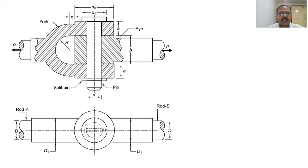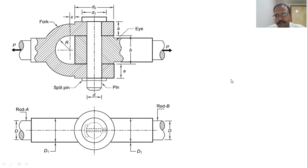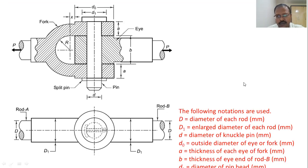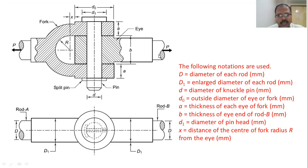This is a two-dimensional sketch of a knuckle joint. We can see there are three elements in the assembly of a knuckle joint: one is eye, second one is fork, and the third one is the knuckle. The various dimensions of the knuckle joint are as follows. D is the diameter of the rod — these are the rods which are to be connected with the help of the knuckle joint. You can see D is the diameter over here.